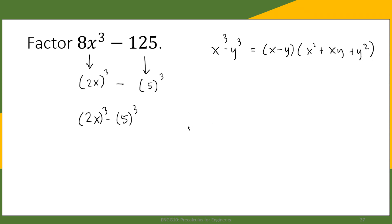We pattern our answer from the formula, so x minus y, that's 2x - 5. And then the first squared, that's (2x)², that's 4x², and then the product of 2x and 5, that's 10x...